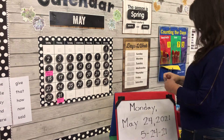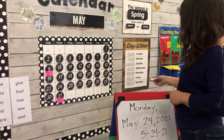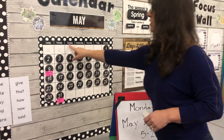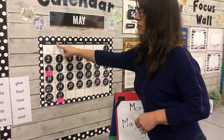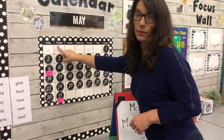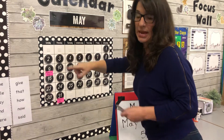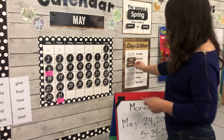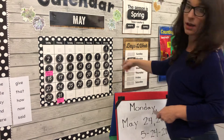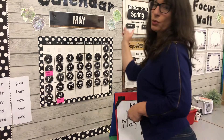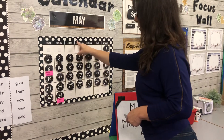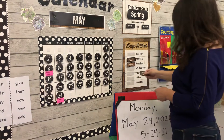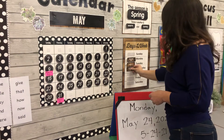Today is Tuesday. So if today is Tuesday, what was yesterday? Look backwards a day — yesterday was Monday. Today is Tuesday. What will tomorrow be? Tomorrow will be Wednesday.